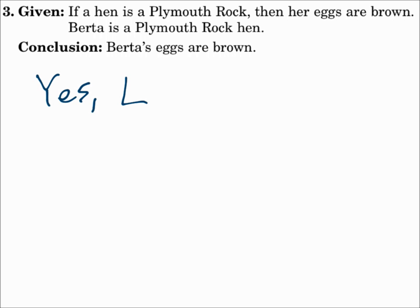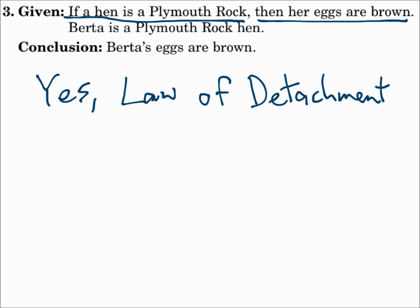This is definitely true because of the law of detachment. Notice how it goes from a general P statement, a hen is a Plymouth rock, to a general Q statement, her eggs are brown. Then it names it. Specifically, Berta is a Plymouth rock hen. That's a specific P, which leads to a specific Q. Berta's eggs are brown. Law of detachment.